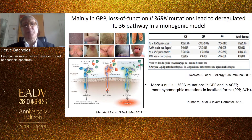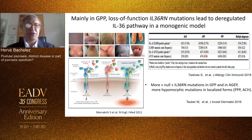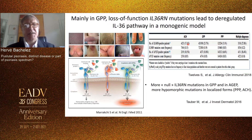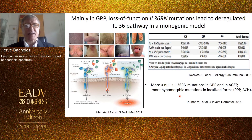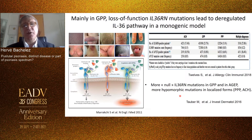The prevalence of the mutation of IL-36RN oscillates from 20 to 25% in GPP, as shown by Saupe-Labbe and Francesca Capone, and 5% in PPP, and roughly 17% in ACH. There are more null mutations resulting in no protein in GPP and in acute generalized exanthematous pustular eruption, a drug-induced GPP-like variant, and more hypomorphic mutations with residual activity in localized forms like PPP and ACH.